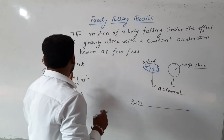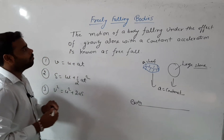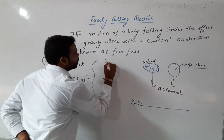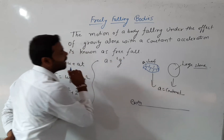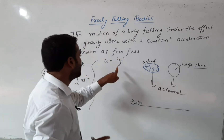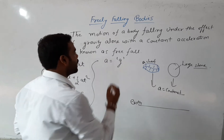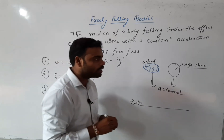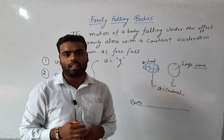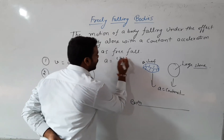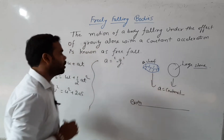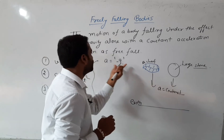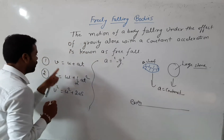All three equations will be converted for freely falling bodies by replacing a with g. In place of acceleration, we put g, which is the acceleration due to gravity. Also, g is always taken as negative because it is a downward acceleration. So a is taken as minus g in all three equations.